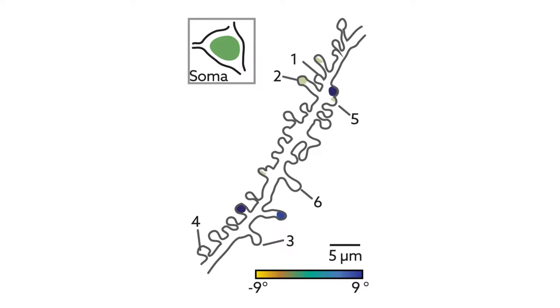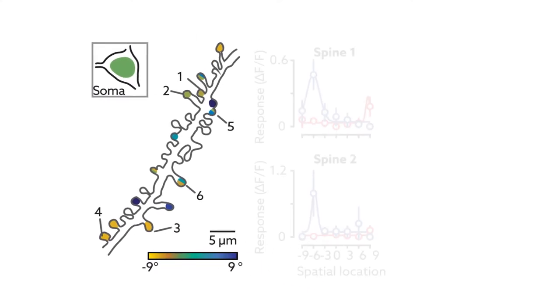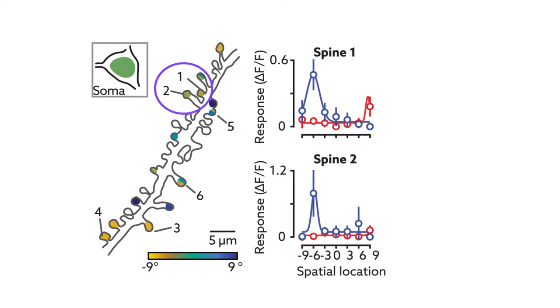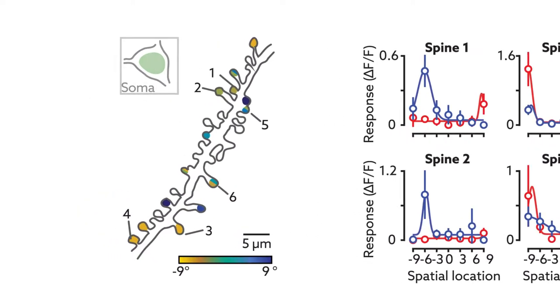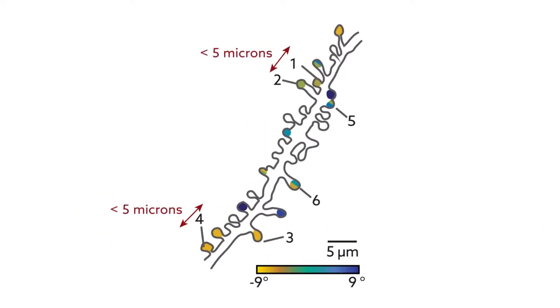Within individual dendrites, spines with similar responses were often neighbors. Sometimes they were on the same side of the dendrite shaft. Sometimes they were across from one another. Either way, they were consistently less than 5 microns apart.